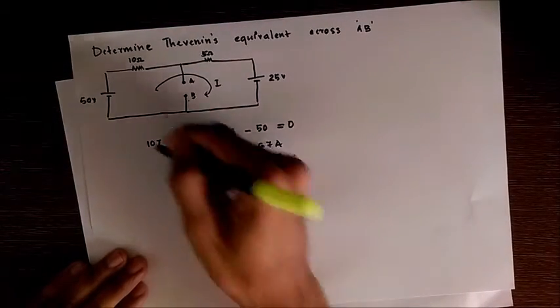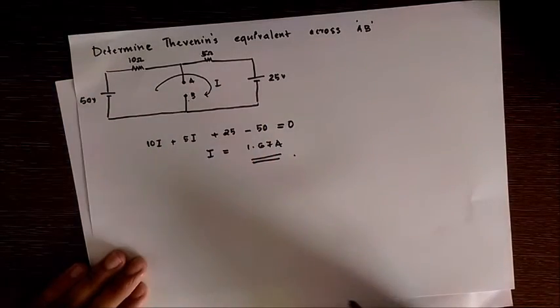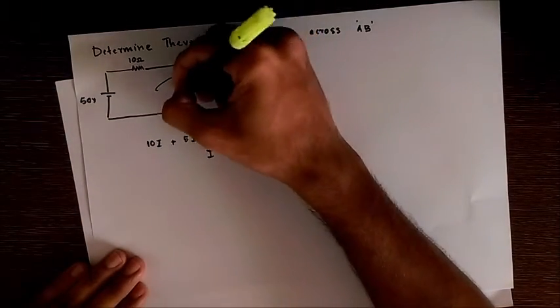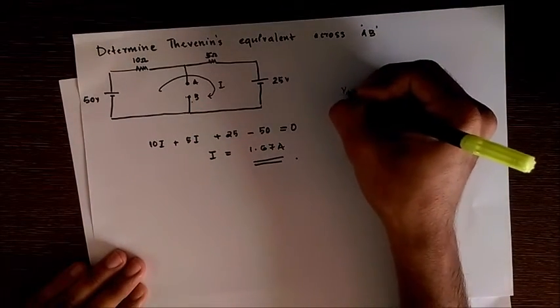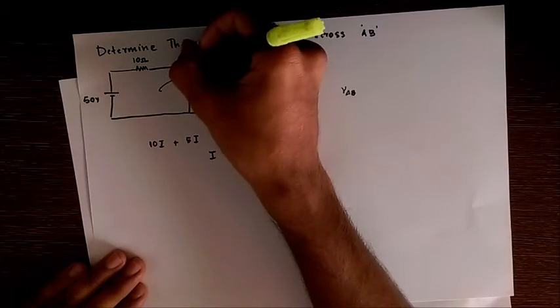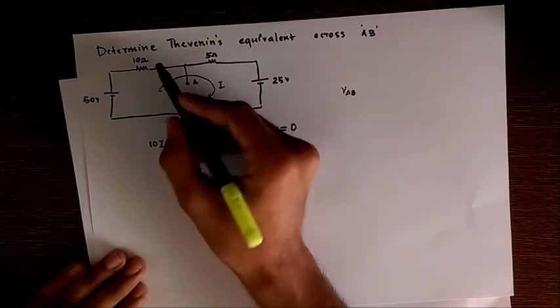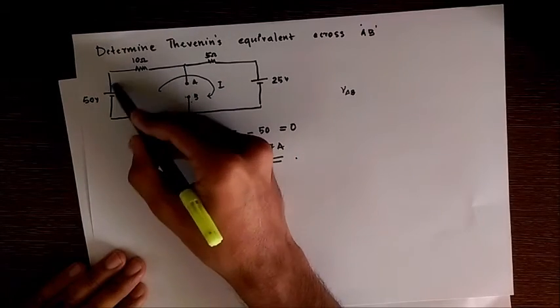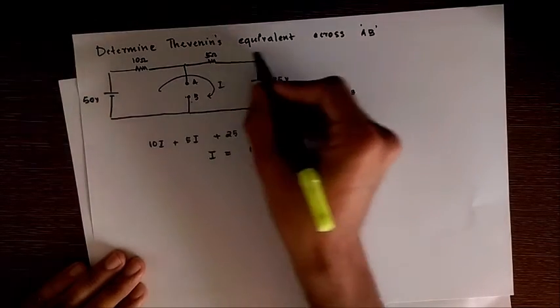So we got the current in each element. Now to find the voltage across AB, it is also same as the algebraic sum of voltages in this branch here or this branch here. I am taking the 50 volt and 10 ohm branch.